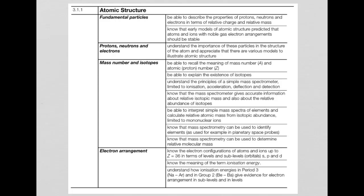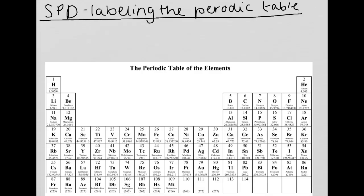Hi again, this is the third and final video for atomic structure, which is the first section of module 1 for the AQA specification. This video is going to be on electron arrangement. This is quite a hard topic to explain, but bear with me and we'll get there. A lot of this is covered in more depth in periodicity, so in that video you'll probably understand it more as well.